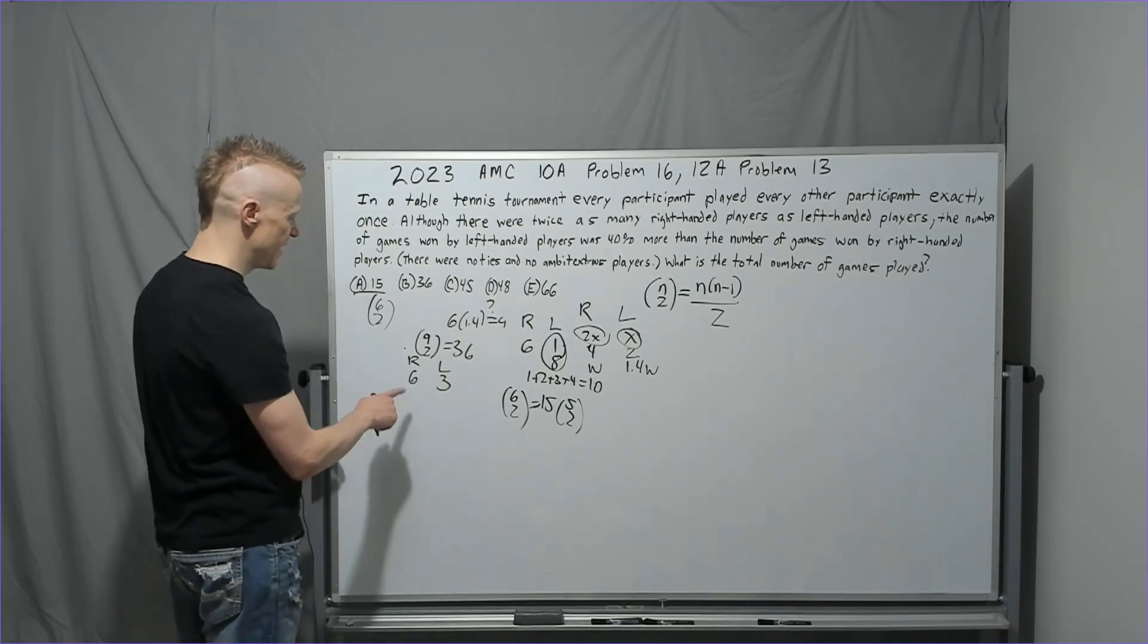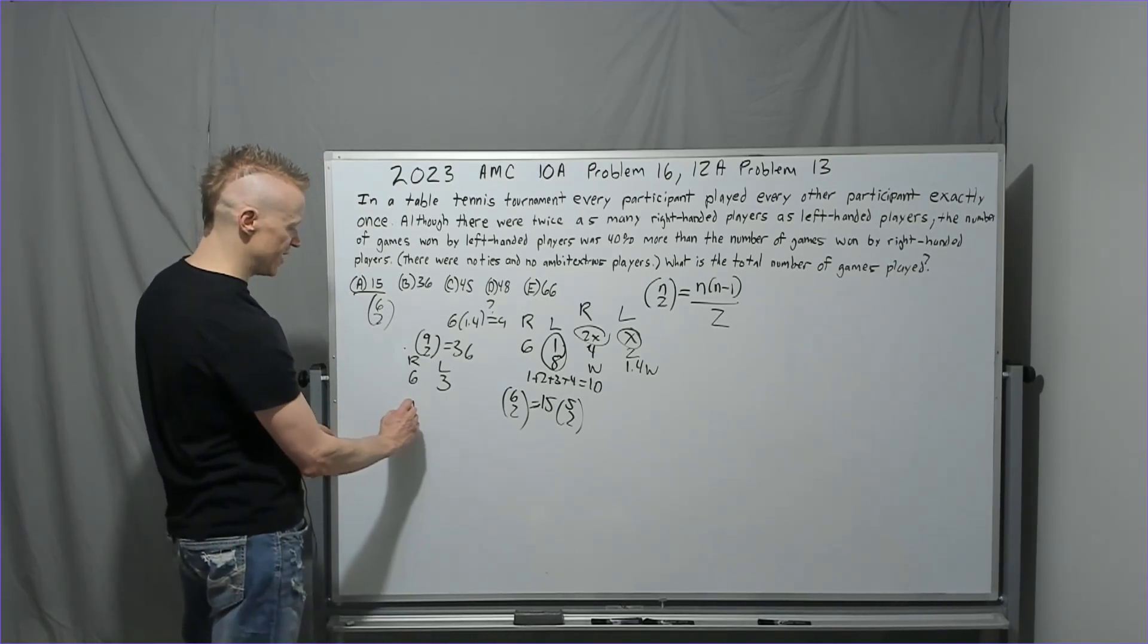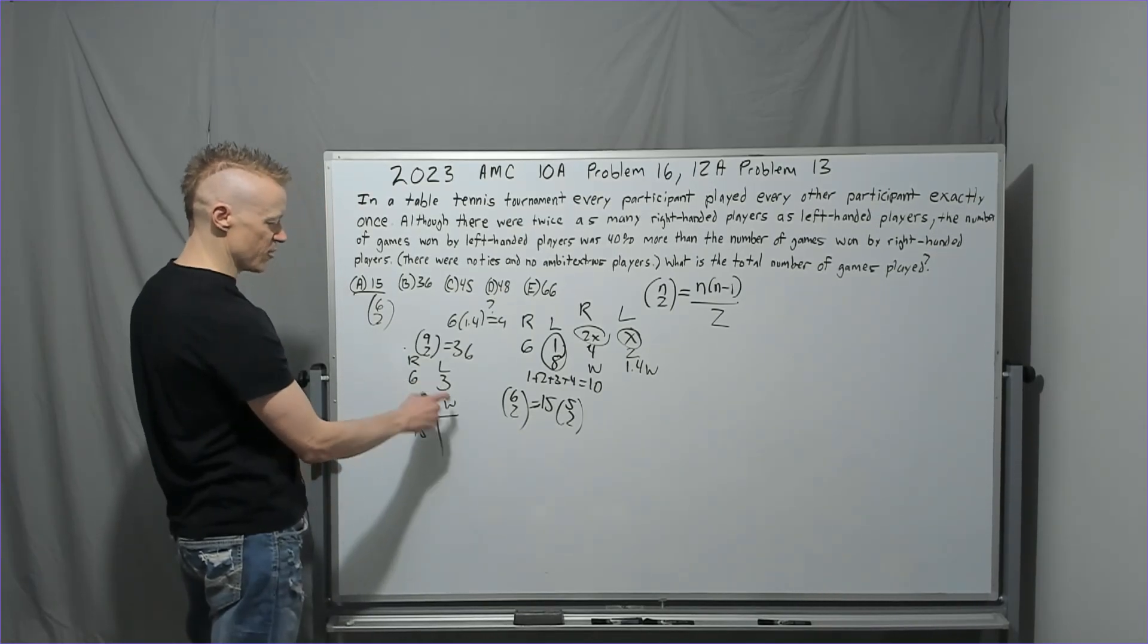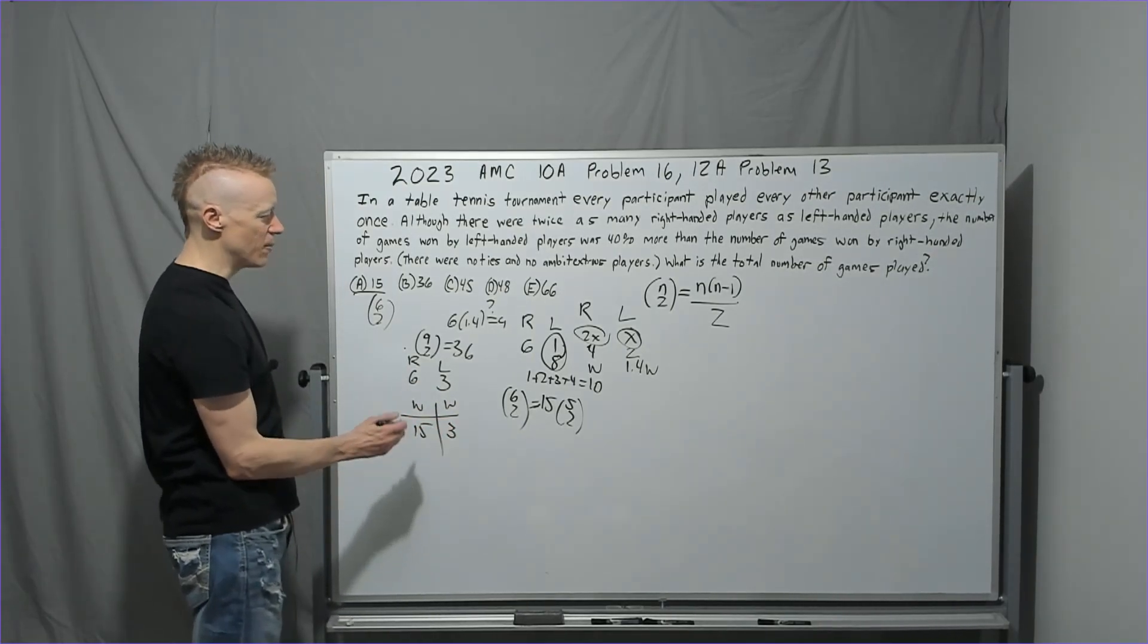If there was 9 players, there would be 6 players on the right, 3 players on the left column. The 6 choose 2 would give, in your wins now, you would have 15 wins here. 3 choose 2 is 3. How many games remain?